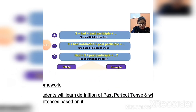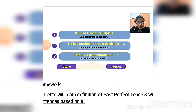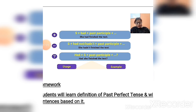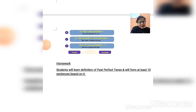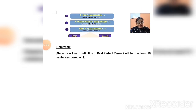Now let us see the structure. In affirmative it is: subject + had + past participle form. In negative it becomes: subject + had not + past participle form. For homework, you have to learn the definition of past perfect tense and write at least 10 sentences based on it in your own language. In the next session I will cover past perfect continuous tense, which will be the last part of past tense. I wish you all the best — be happy and be safe. Thank you so much.